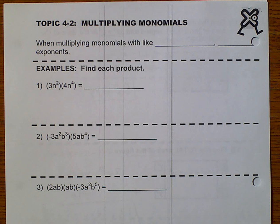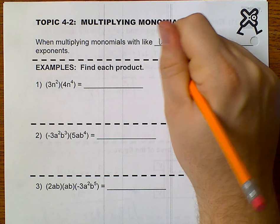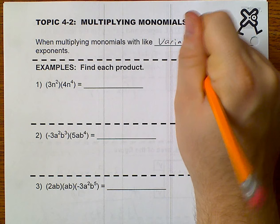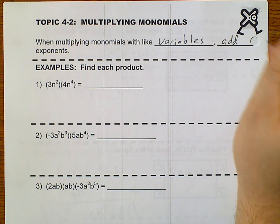Hello, this is topic 4-2 on multiplying monomials. Very simple rule. When you're multiplying monomials with like variables, you add the exponents.